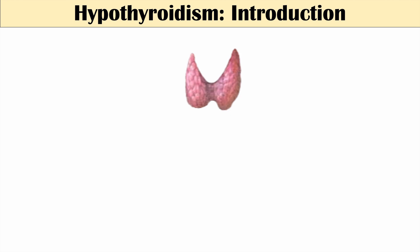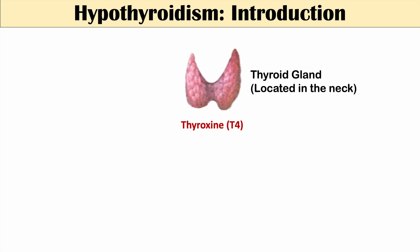The thyroid gland, which is a butterfly-shaped gland located in your neck, is responsible for producing two very important hormones: thyroxine or T4, and triiodothyronine or T3. These two thyroid hormones play very important roles in the body, and it's important to note that thyroxine can be converted to triiodothyronine, which is a more active thyroid hormone.